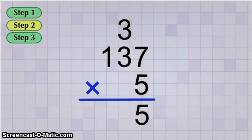Now it's time for the second step. We multiply the bottom digit, 5, by the next digit to the left in our top number, 3. So 5 times 3 equals 15.